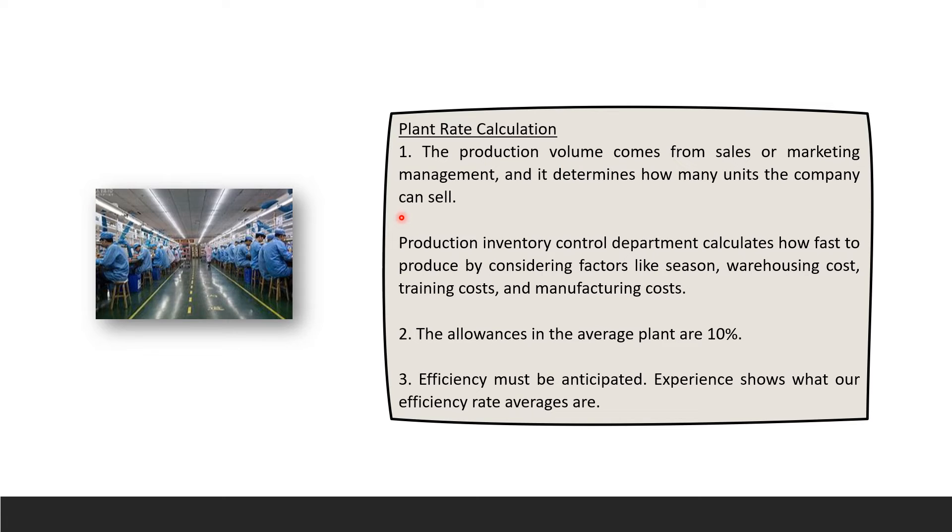Rate calculation: production volume determines how many units a company can and is producing. Production inventory control department calculates how fast we're going to produce, considering seasonality, warehousing cost, training cost, manufacturing cost. All the time you have to calculate cost and cost and cost.